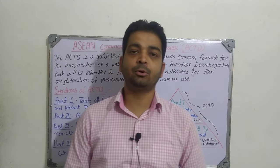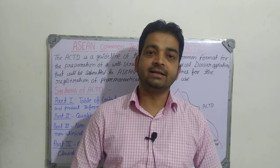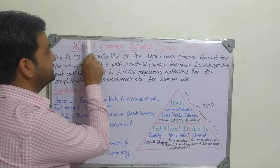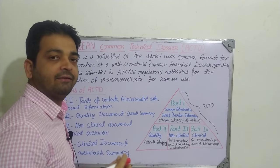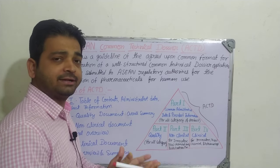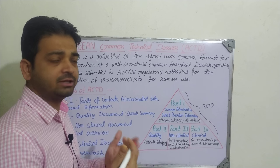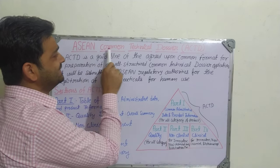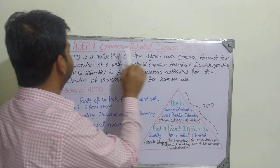Hello students. Now we are going to discuss about the ACTD, Asian Common Technical Dozer. So this is nothing but ASEAN. ASEAN means ASEAN countries when they will be having the particular types of common technical documents which they are submitting to the regulatory authority for getting the approval. ACTD means the ASEAN Common Technical Dozer.